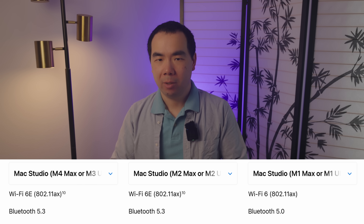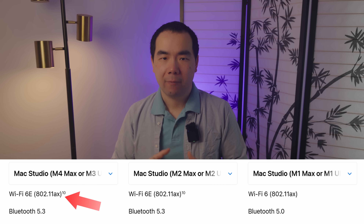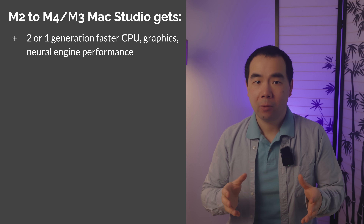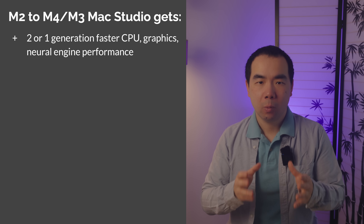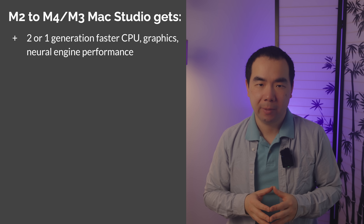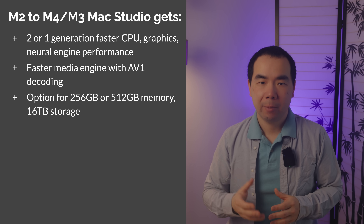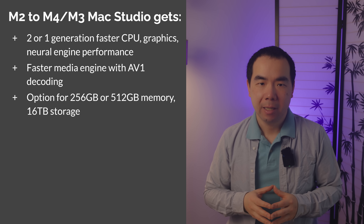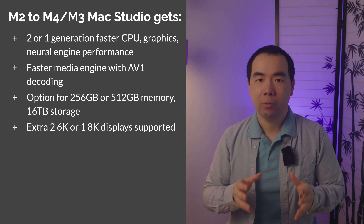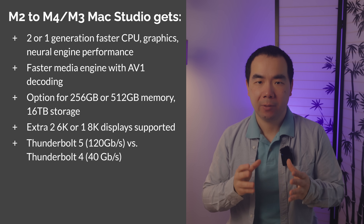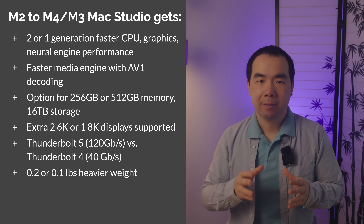Perhaps the biggest disappointment is that the new studio still has WiFi 6E and not WiFi 7, but most folks will probably make use of Ethernet for a desktop. So to summarize, if you upgrade from the M2 series to an M4 or M3 Mac Studio, you would get an M4 or M3 chip that gives 2 or 1 generation faster CPU, graphics, and Neural Engine performance; a faster media engine that supports AV1 decoding; the option to upgrade memory beyond 192GB and storage beyond 8TB; an extra 2 6K or 1 8K display supported; three times faster Thunderbolt 5 instead of Thunderbolt 4 ports; and a slightly heavier machine.